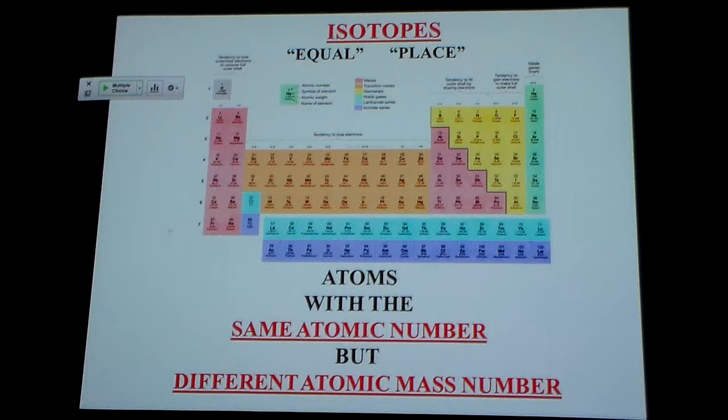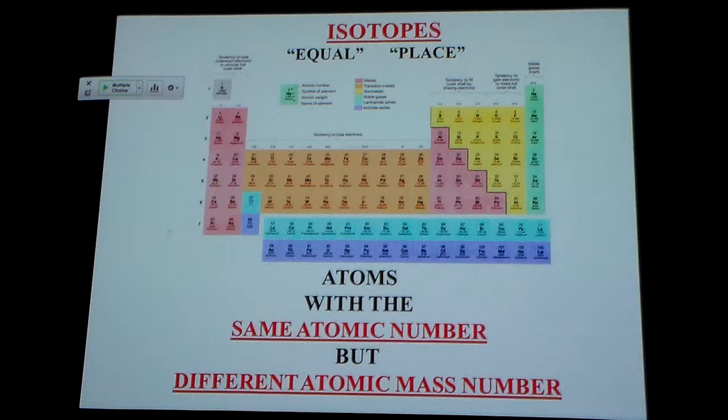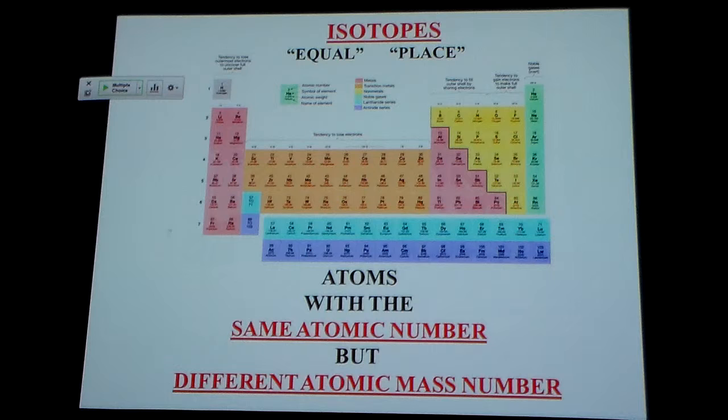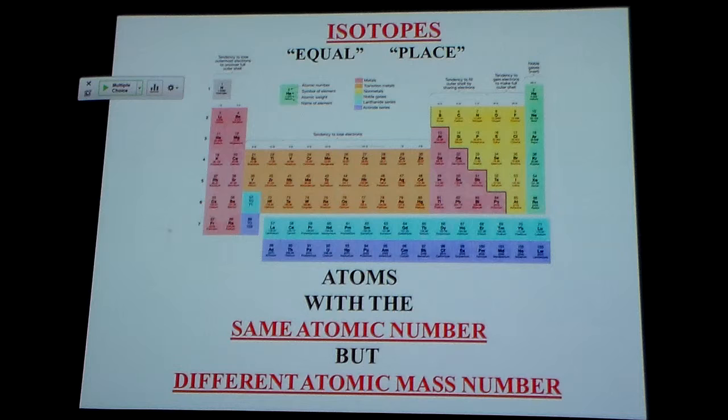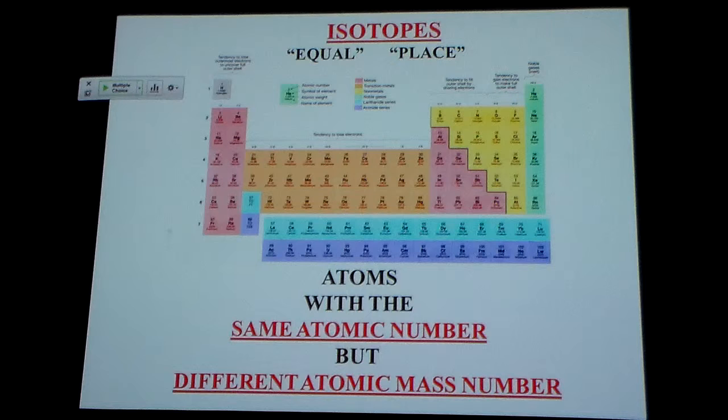Now we have something that we call an isotope. Iso means equal, and tope means place. It kind of means we're taking an atomic number and we're going to leave the number of protons the same. We're going to leave the number of electrons the same. But I'm going to stick in a different number of neutrons into the nucleus. So I'm not changing the charge on the unit, and I'm not going to change the atomic number. But I am going to change the atomic mass number because I'm sticking in those heavy neutrons.